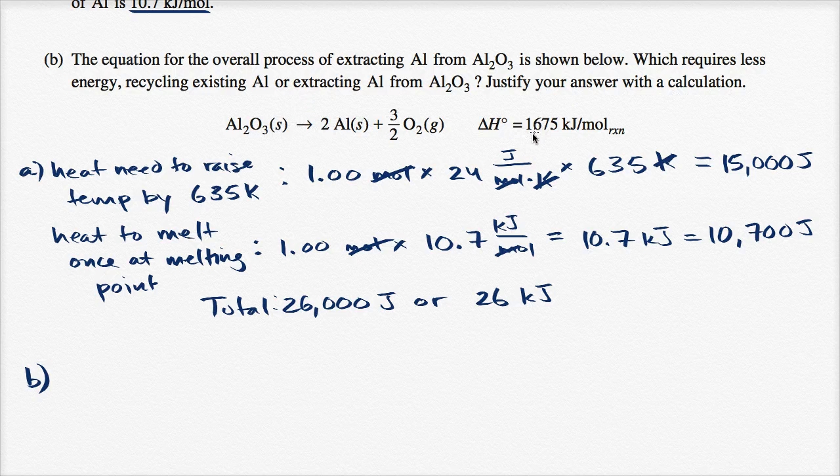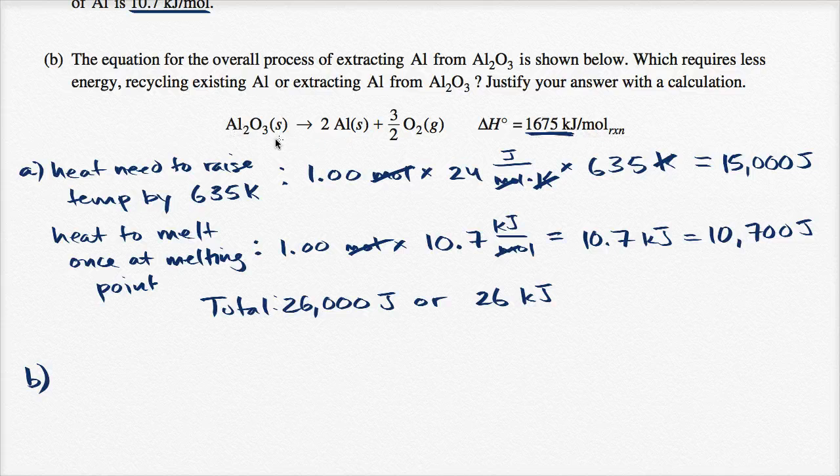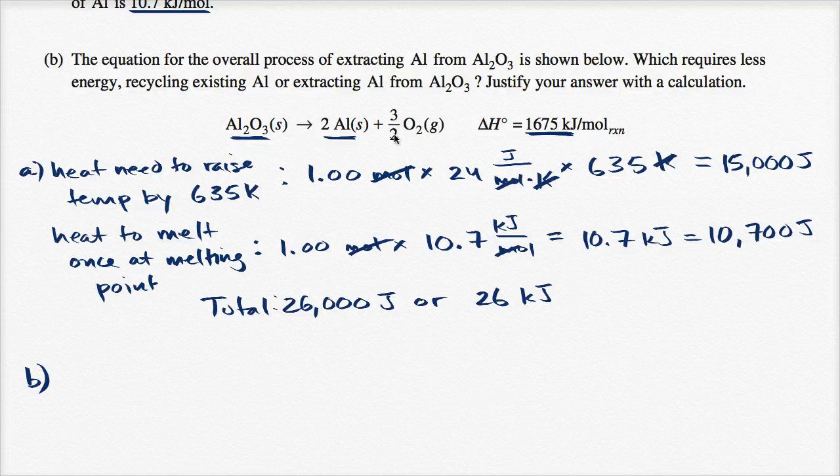This gives us the heat necessary for a mole of the reaction. So if you get a mole of aluminum oxide and put in this much heat, you're going to get two moles of aluminum and 1.5 moles of molecular oxygen. So the equation for the overall process...